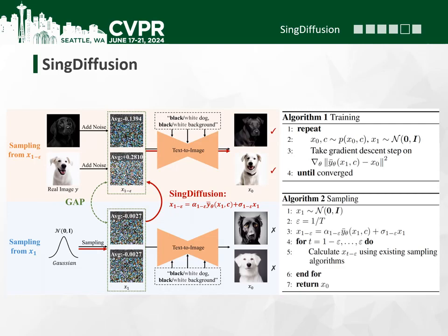For training, we train a model named sinc diffusion to predict y-bar. In the singular sampling process, we can use sinc diffusion to translate x_1 from the normal Gaussian distribution to the distribution at 1 minus epsilon. Then we can use the existing sampling algorithm for the remaining time steps. Since sinc diffusion is independent of the remaining process, our model is plug-and-play.